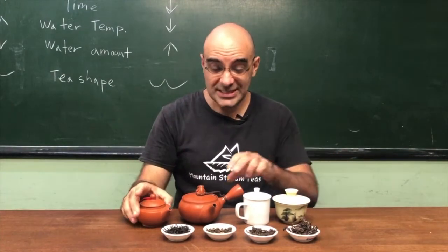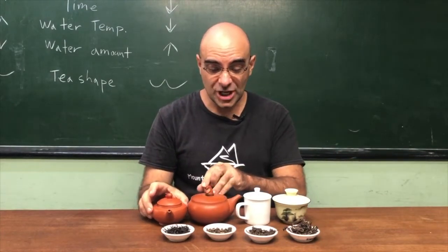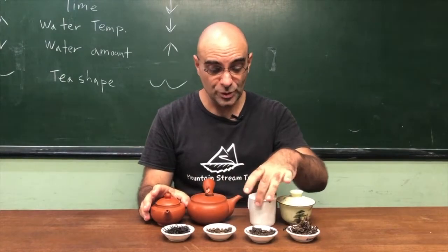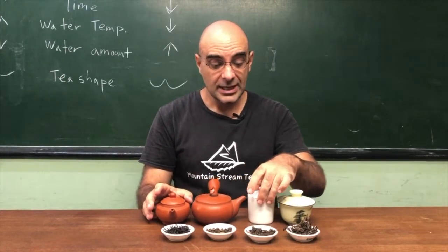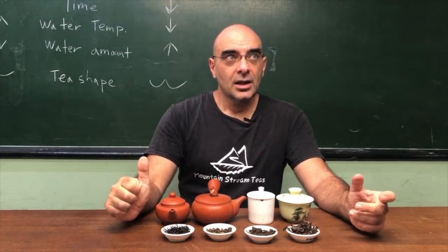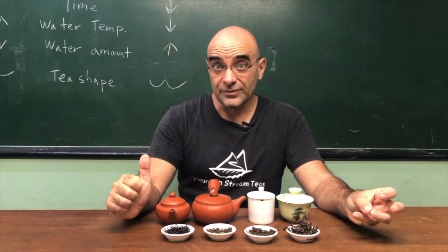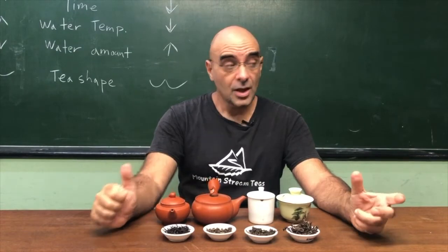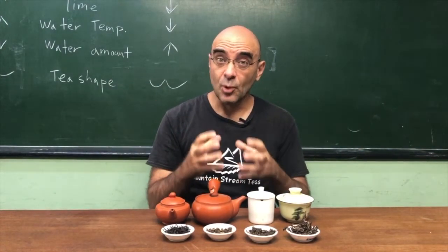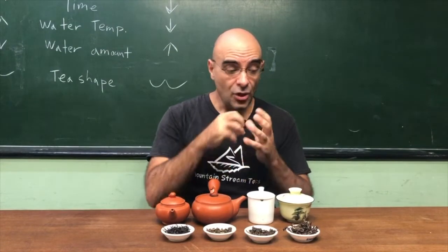Now let's get into the tea shape. The tea shape is super important because when you're brewing the teas, the best way to think about it is surface area. The more water is touching the tea leaf, the faster and more intense the flavors are going to be extracted from those tea leaves.